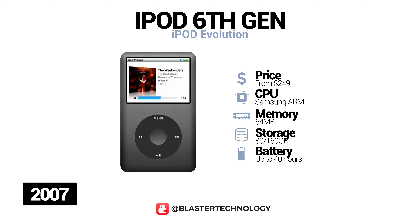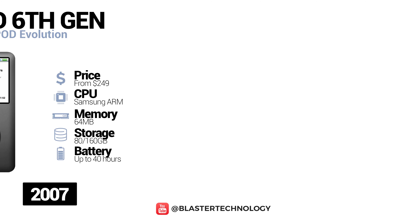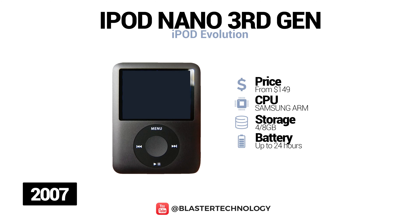The sixth generation iPod, known as the Classic, was released in 2007. This version had an improved battery life, running up to 36 hours of music playback and 6 hours of video playback. It also had a backlit screen, and its front plate was made of anodized aluminum. Apple launched the third generation iPod Nano in 2007, which could play videos on a wider screen, had a new interface and cover flow navigation, with a battery life of up to 24 hours of audio and 5 hours of video playback.